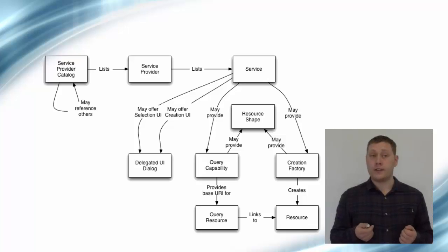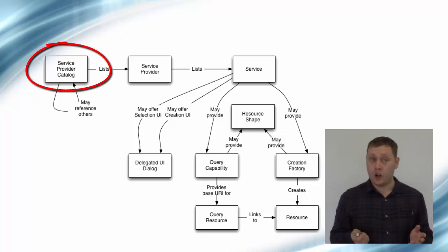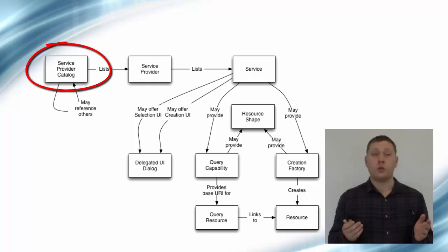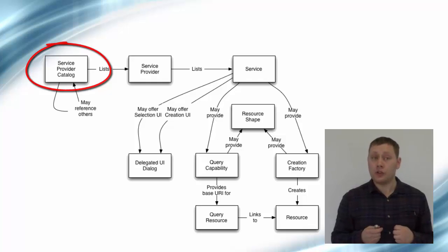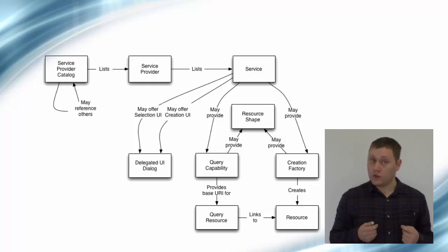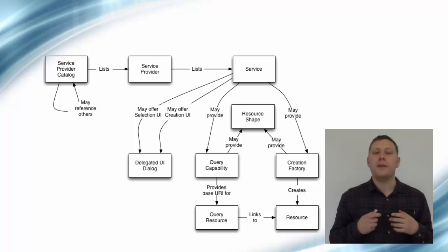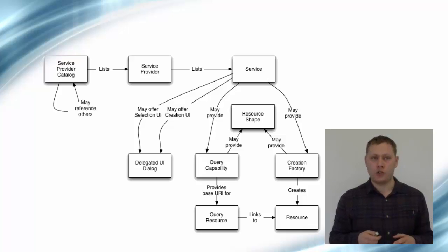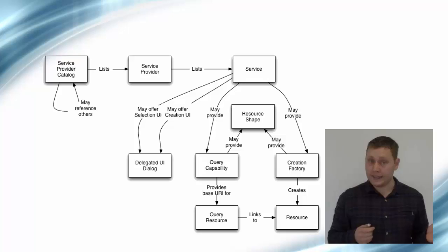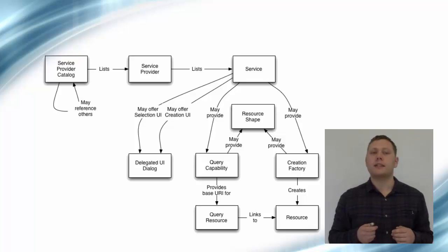Next on the list we have the service provider catalogue. This should serve as an entry point into an application that wishes to locate services and resources from a service provider. Note: in the IBM implementations of OSLC there is an entry point which comes even earlier, and this is known as the root services. In OSLC, a set of capabilities which are available to you are called services.